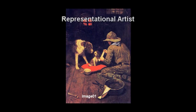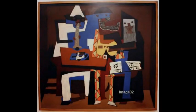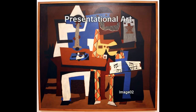We can use the root word of the style and identify a representational work as that which represents life as we know it. Take a look at this painting — it was done by Norman Rockwell. Rockwell is a well-known representational artist; he created works that represent life that is similar to our experience. We can identify the style of his work as representational. On the other hand, if we consider the work of Pablo Picasso, we do not see in his work images or experiences that are readily identifiable. We say that his work is presentational in nature.